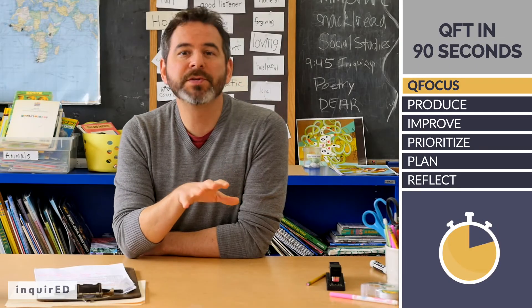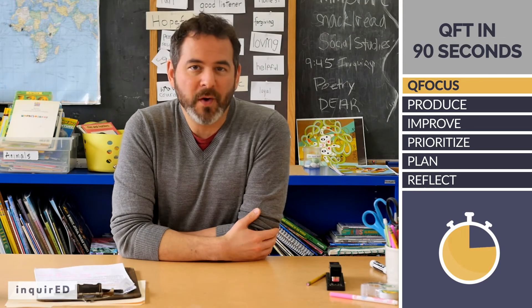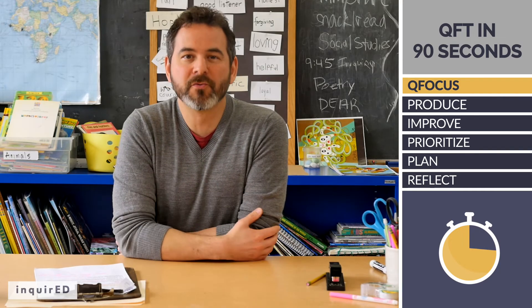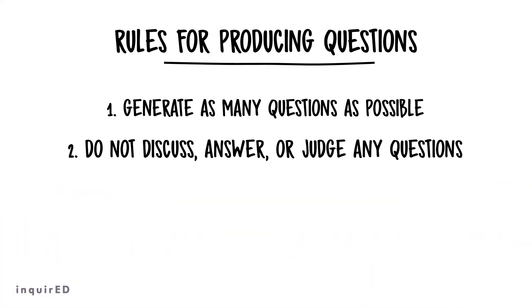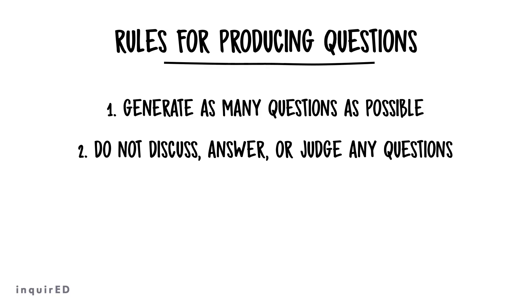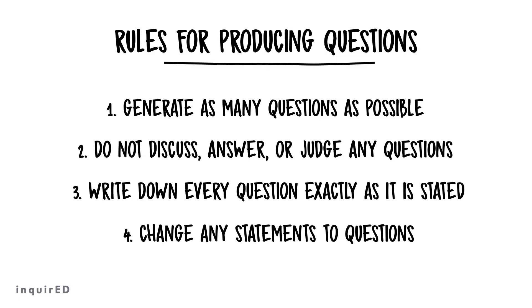Before you start producing questions, pick someone to write down and number the questions as they come, then review the rules. Rule number one: generate as many questions as possible. Rule number two: do not discuss, answer, or judge any questions. Rule number three: write down every question exactly as it is stated. Rule number four: change any statements to questions.